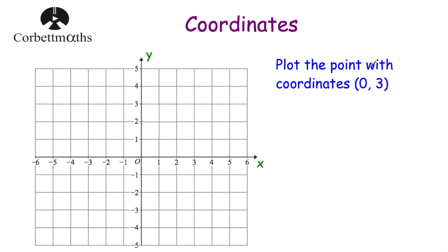This time we've been asked to plot the point with coordinates (0, 3). The x-coordinate is 0, so we're not going to go along the x-axis — we stay at the origin horizontally. Then the y-coordinate is 3, so we go up 3 — 1, 2, 3. That's our point (0, 3): 0 along the x-axis and then 3 up vertically.